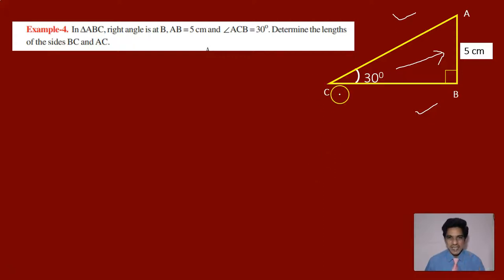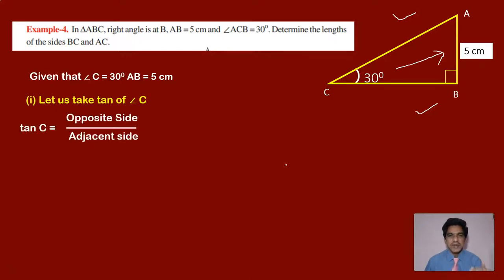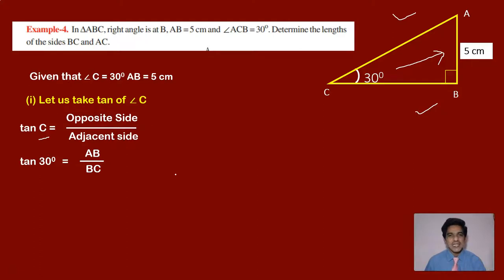Now, recollect the definitions of trigonometric ratios. You can have sine of the angle as opposite side by hypotenuse, and tan of the angle as opposite side by adjacent side. To calculate the adjacent side, the ratio of opposite side to adjacent side is tan. So consider tan of angle C. The formula for tan is opposite side by adjacent side, which is AB divided by BC. In place of C, we write 30 degrees. So tan 30 degrees equals AB by BC. From the trigonometric table, tan 30 degrees equals 1 by root 3.